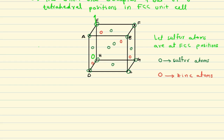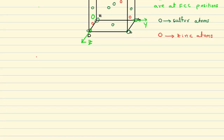To understand the exact position of the zinc atom, we put H at the origin. This is our z-axis, this is the positive y-axis, and this is your positive x-axis.